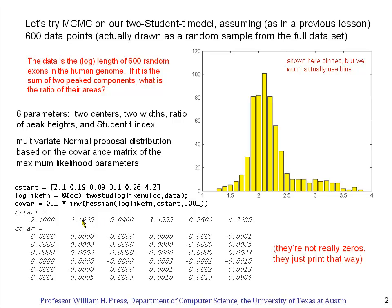We don't want to take a step of the full covariance, because that would be a step of plus or minus one whole standard deviation — we want a small multiple of it. So in code, we take 0.1 times the covariance matrix, computed from the Hessian of the log likelihood function at the starting location. Here are the numerical values that come out of that — the zeros aren't really zeros, they're just small numbers that print as zero.